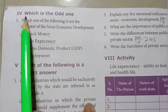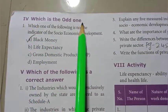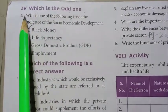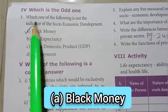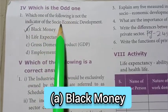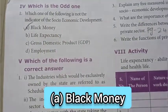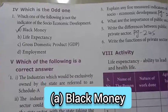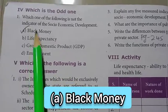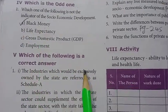Turn to page 248. Room number 4, which is the odd one out. First one: which of the following is not an indicator of socio-economic development? The answer is option A — black money.